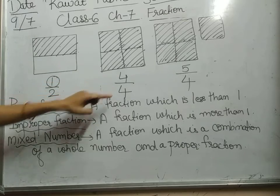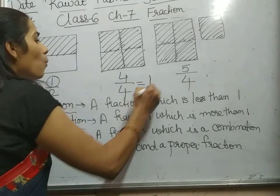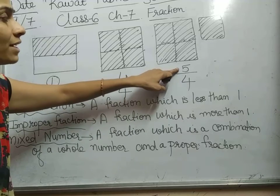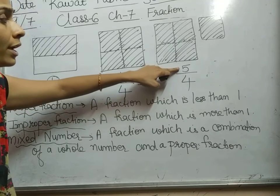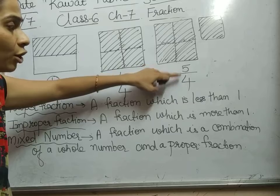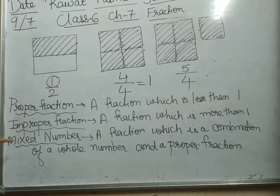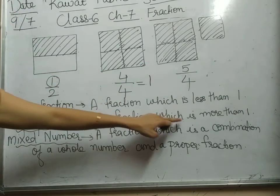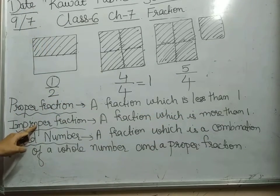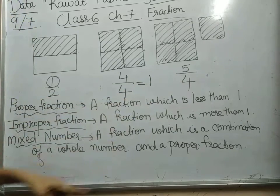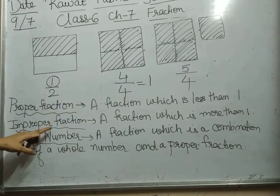Here four by four will give you one. And here five by four — the five is greater than four. So, here numerator is greater than denominator. A fraction which is more than one is called improper fraction. Here five by four, it is more than one, so this type of fractions are called improper fractions.